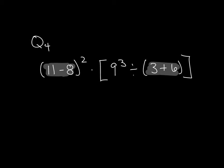So I want to go through and do 11 minus 8 and then 3 plus 6. When I do that, I am left with 11 minus 8 is 3. So that will give me 3 squared times 9 to the third divided by 3 plus 6 is equal to 9.